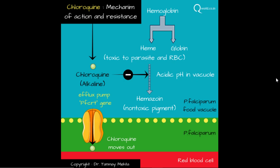The Plasmodium parasite infects the RBC and takes up hemoglobin, digesting it into heme and globin. It derives nourishment from the globin portion, but the heme molecule is very toxic to the parasite as well as the infected RBC. So the parasite converts this heme into hemozoin, which is the non-toxic pigment.